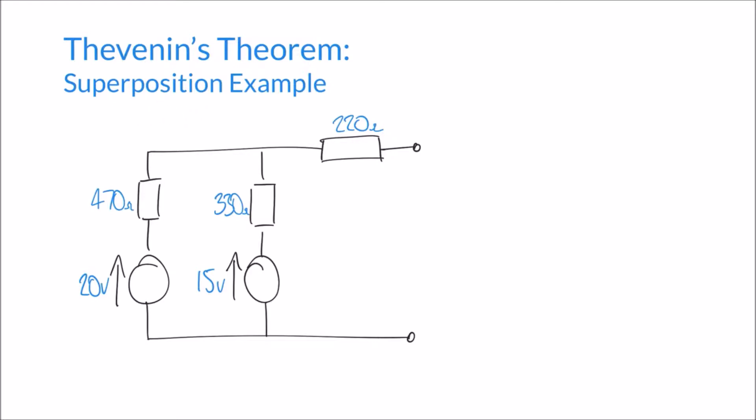We have two voltage sources in this circuit, but we're going to use the superposition principle to take just one at a time. First, we'll take the left 20-volt source into consideration and ignore the right-hand 15-volt source. Then we'll do the opposite. To start, we remove the 15-volt power supply and replace it with a short circuit — marked SC — effectively removing the right-hand voltage from the circuit.